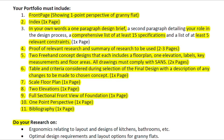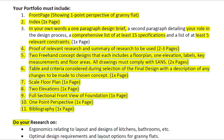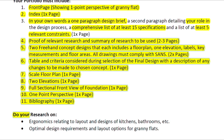You need proof of relevant research and a summary of research to be used — two to three pages of research. Then two freehand concept designs, each including a floor plan, one elevation, labels, key measurements, and floor areas. After that, a selection table with criteria considered in choosing the final design, with a description of any changes, followed by the chosen concept drawn to scale with a floor plan, two elevations, a full section, and a one-point perspective.